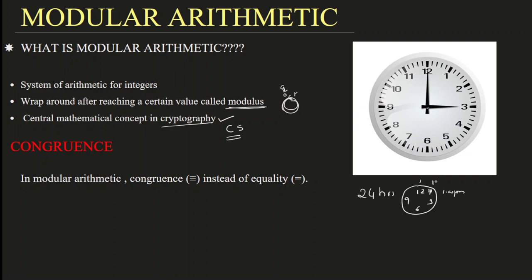Actually it is 12 hours, then 13, next is 2 — 14, 15, 16, 17, 18, like this. Now 14 hours — I need 14 hours — we call it as 2 pm. Yes, if I say 20 hours on the day, that is 8 pm. 23 hours on the day is 11 pm, like this.